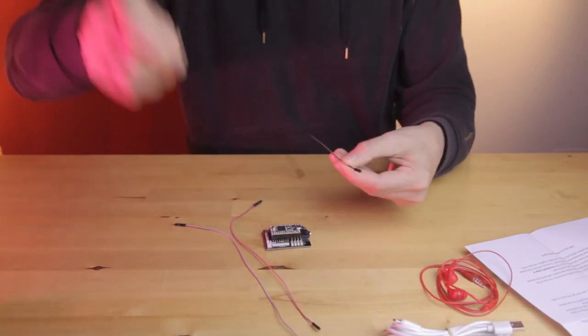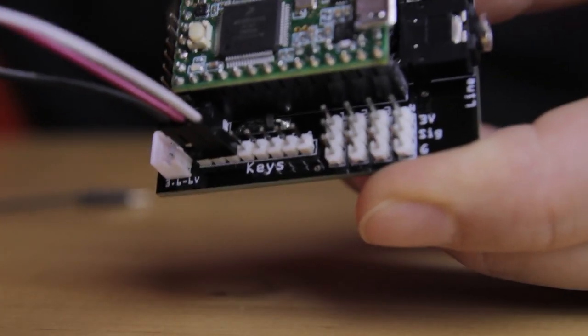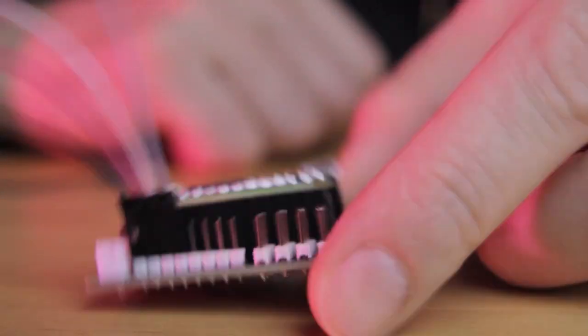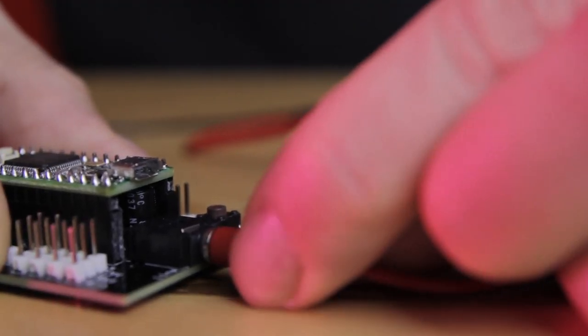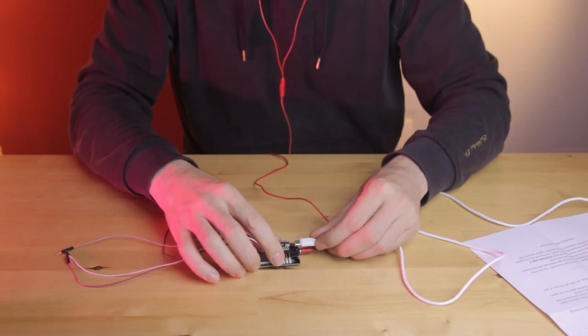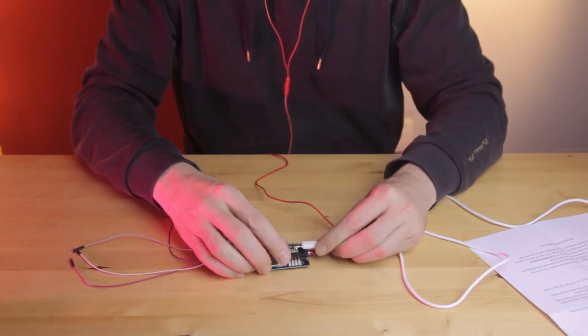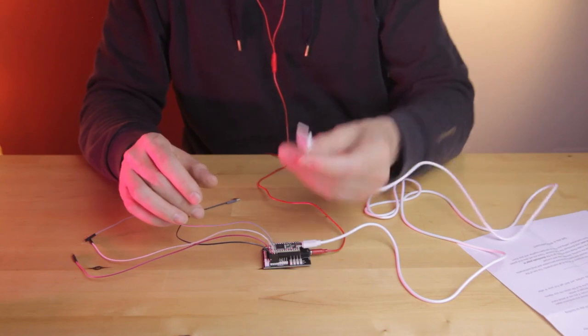First thing, get these four cables plugged in right over here. Then I plug in the earbuds so that I'll be able to hear the instrument. Next is power. Connect the USB cable to the board and then into a phone charger or computer USB port.